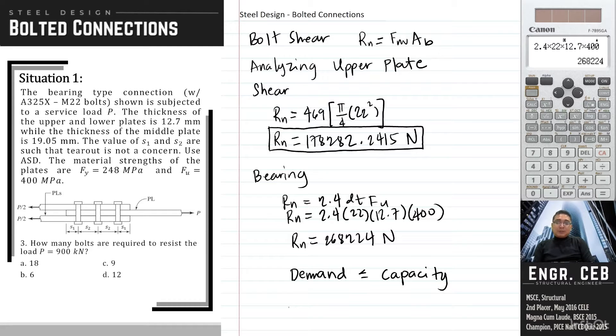So for the upper plate, the demand is P over 2, and then the capacity is, we will use now this R sub N. We divide this by 1,000 in order to be kilonewton, so 178.282 to 2415 kilonewton. So take note, this is the capacity of one bolt, so we will multiply this by the number of bolts.